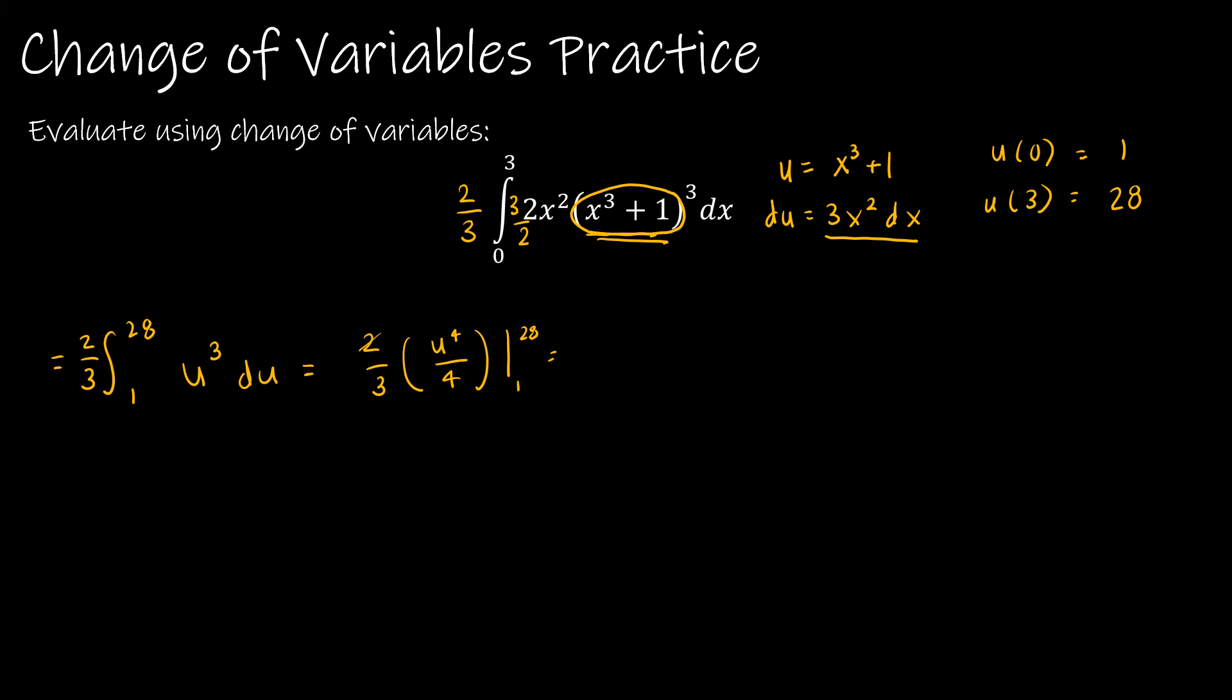I'm going to go ahead and reduce that a little bit, so I'm going to call this u to the 4th over 6 from 1 to 28. So u to the 4th starting with 28. So 28 is 614656 over 6, and then minus 1 to the 4th, which is just 1, 6. So obviously that gives me 614,655 over 6. And if I turn that into a decimal, it's 102,442.5.